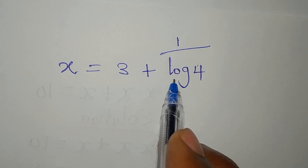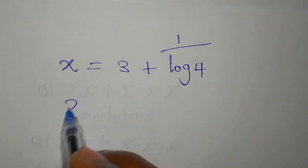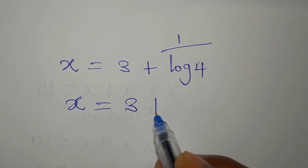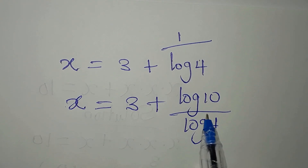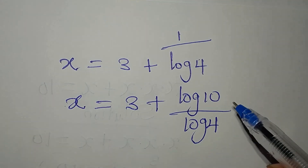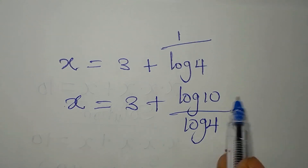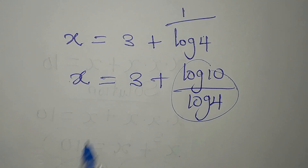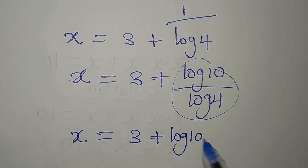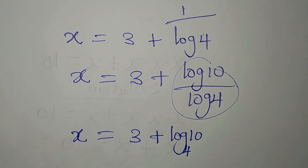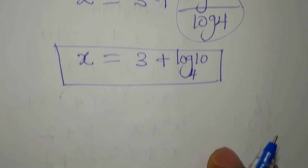So x equals 3 plus log 10 over log 4. Applying change of base, log 10 over log 4 is log 10 to base 4. So our answer is x equals 3 plus log 10 to base 4. Let's verify this value.